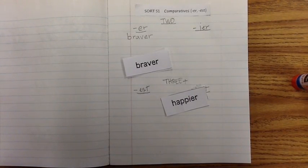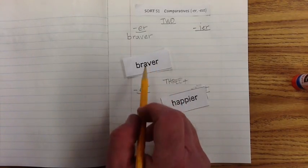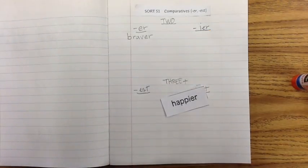And this would be like, the lion is braver than the mouse. Okay, we're comparing how many things? The lion and the mouse. That's two. So, there we go. We're going to use braver, and it ends in ER.